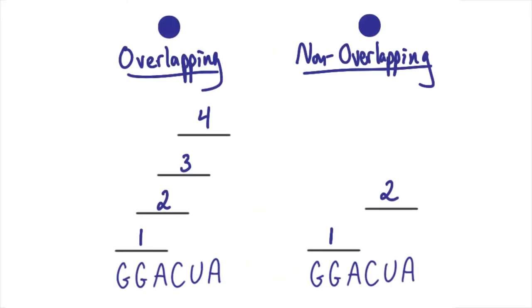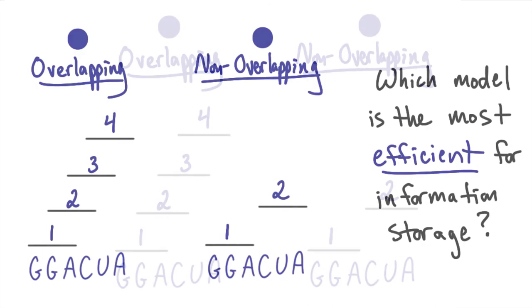An alternative model suggested that there was no overlap, and one triplet was read right after another triplet, and so on. So of these models, which one do you think would be the most efficient for information storage?